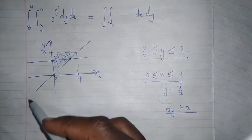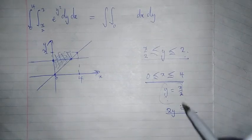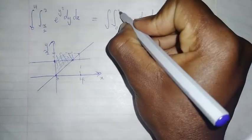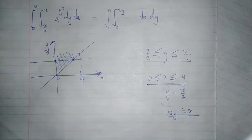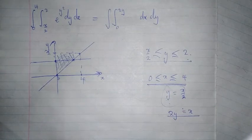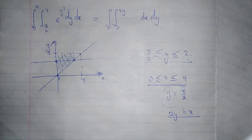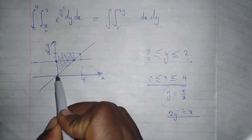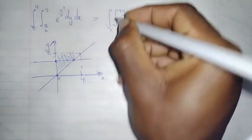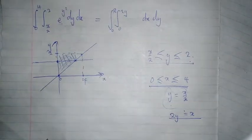Because this graph is y equals x over 2, so what is x? x is equal to 2y. So this is my 2y here, this is my upper limit. Then for y, we just need to look at the region and see the limits of y in the region. The limits of y are from 0 to 2.